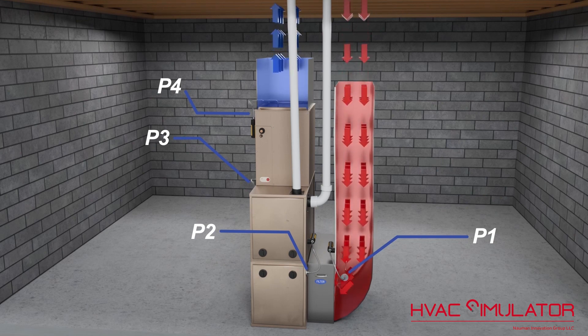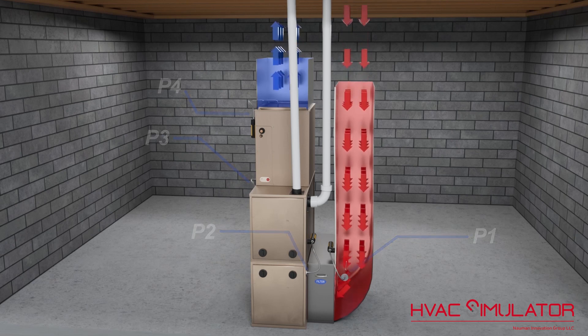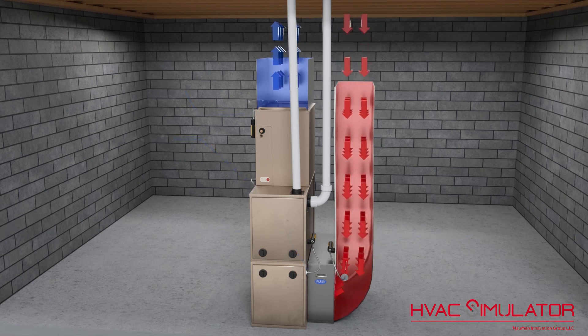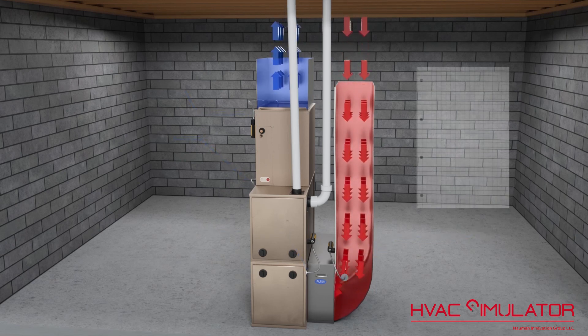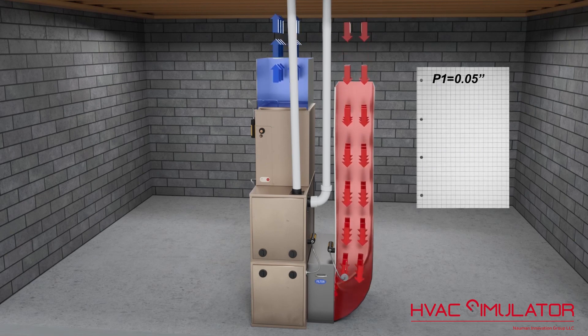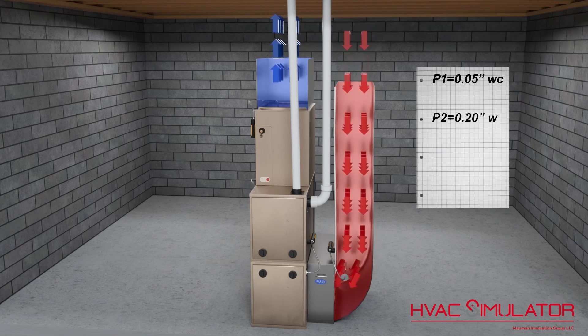Once the system runs at optimal blower speed, document the four heating and the four cooling speed pressures. These values can be referenced during a maintenance check and quickly determine a performance issue.